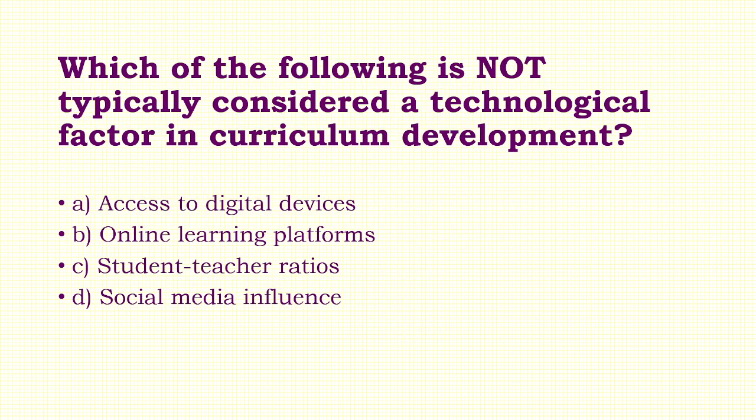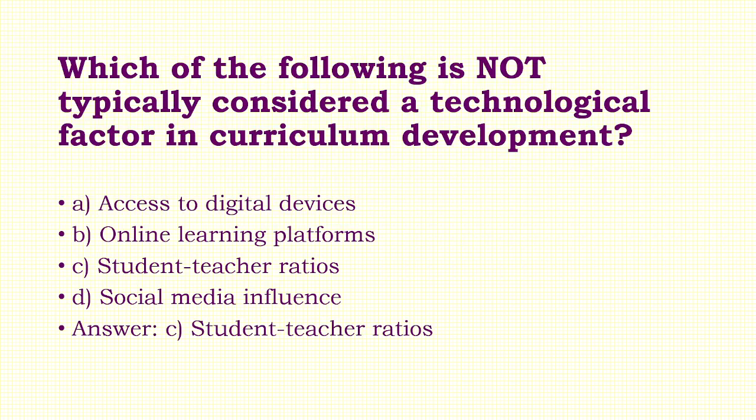Question 31: Which of the following is not typically considered a technological factor in curriculum development? Options: A) Access to digital devices, B) Online learning platforms, C) Student-teacher ratio, D) Social media influence. Answer: Option C — Student-teacher ratio.